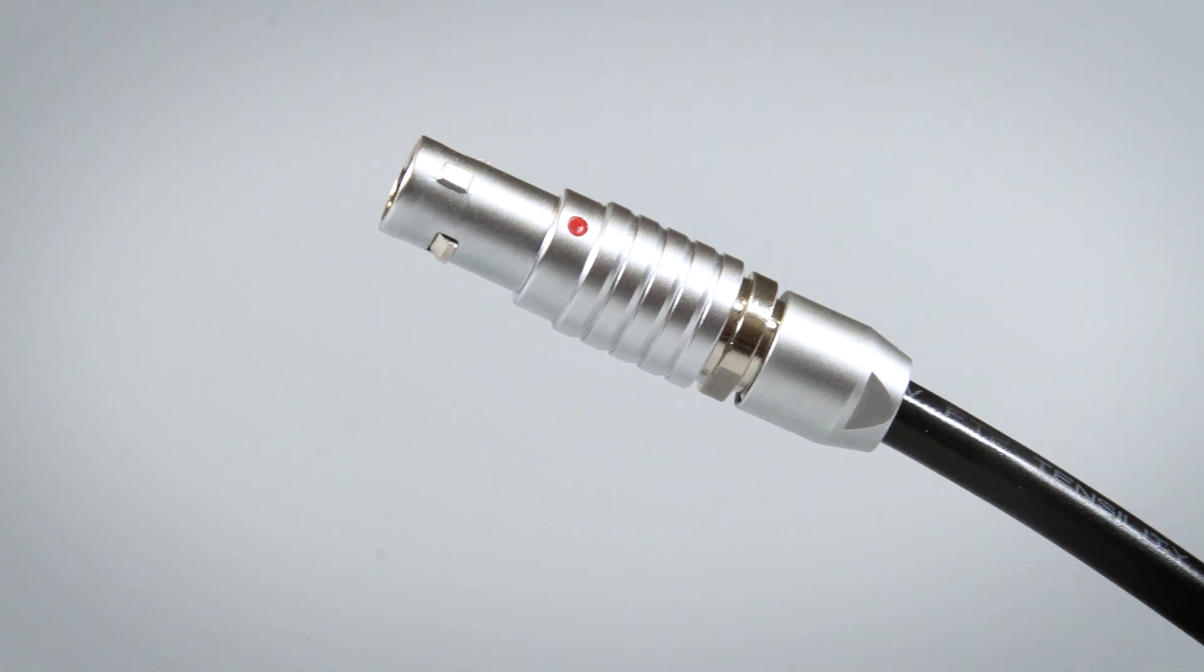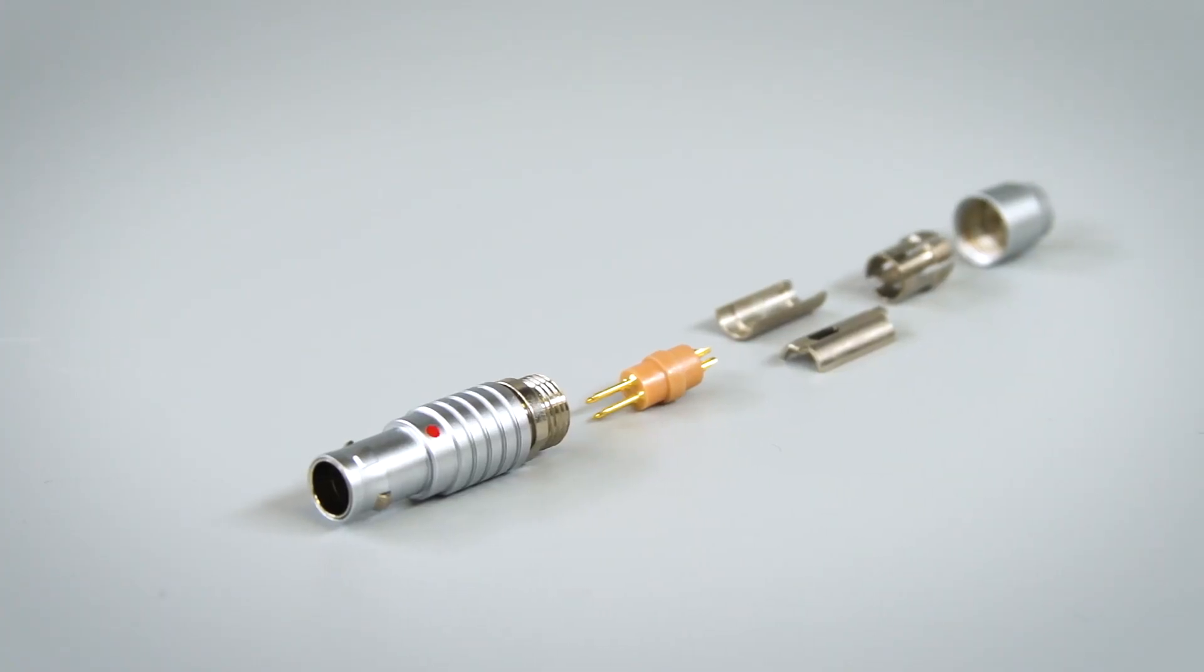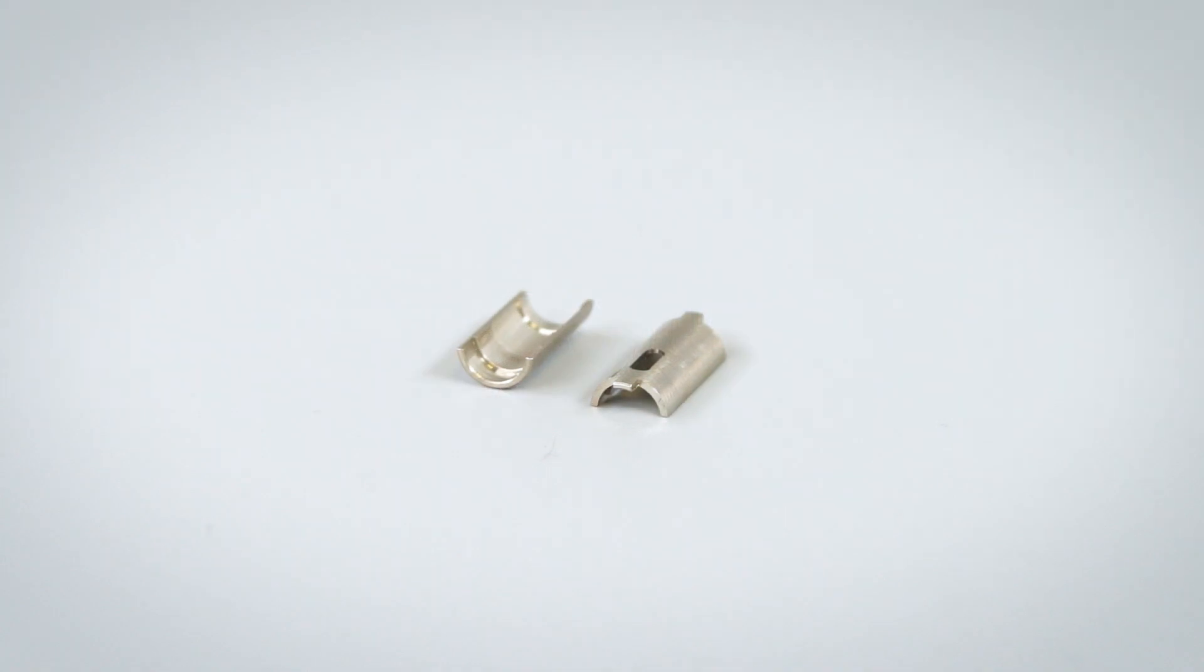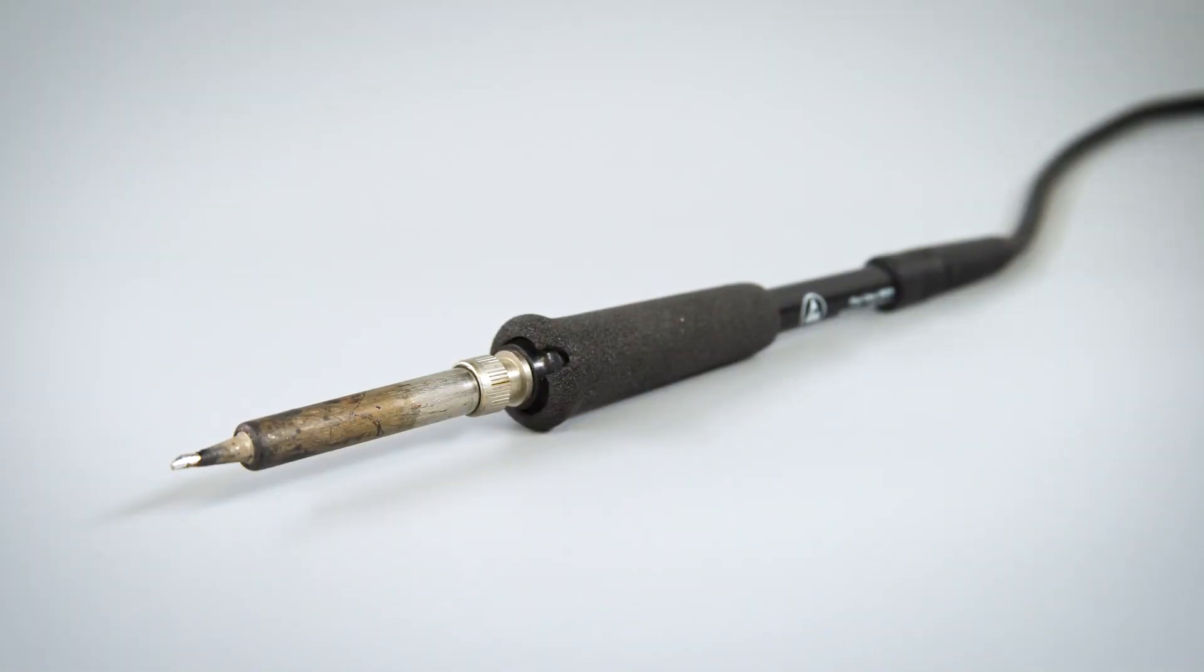The materials you will need are a push-pull locking connector that includes an outer shell, slit insert carriers, an internal connector, a collet and collet nut, soldering equipment, and wire.